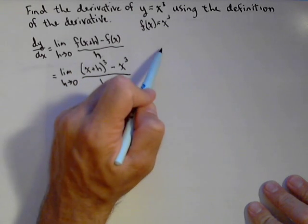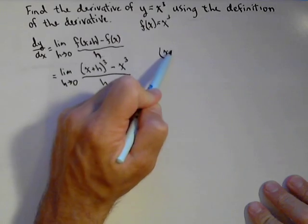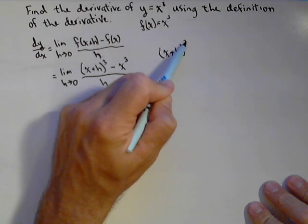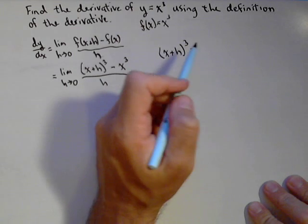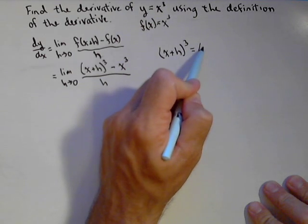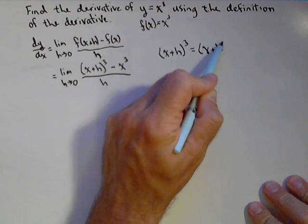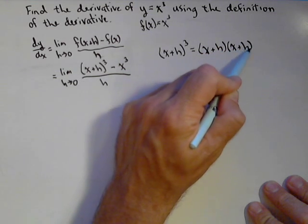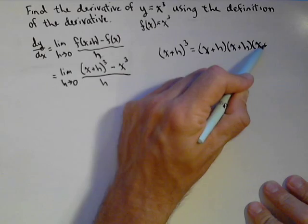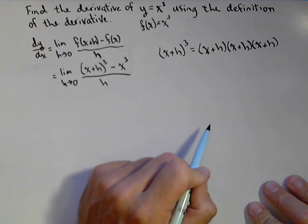Now let's go ahead and multiply this out: x plus h, the quantity cubed. If you know Pascal's triangle or the binomial theorem, you could use that as well. But for practice, let's multiply it all out and see what we get.